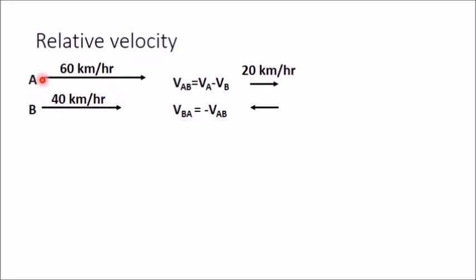For example, if A and B are moving in the same straight line in the same direction with 60 km per hour and 40 km per hour, then velocity of A with respect to B is equal to VA minus VB. You subtract VB from VA and get 60 minus 40, that is 20 km per hour in the direction of A.